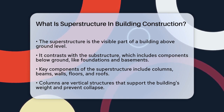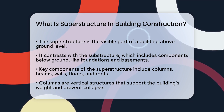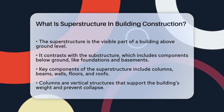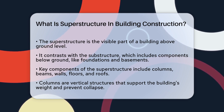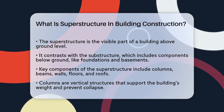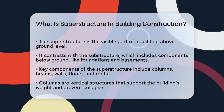The superstructure is the part of the building that is constructed above ground level. This includes all the components that you see when you look at a building, such as the walls, floors, roof, and even the columns and beams that hold everything together.